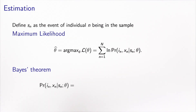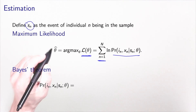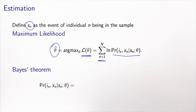Maximum likelihood estimation consists in solving an optimization problem that maximizes the log-likelihood function, which is the sum over all individuals in the sample of the logarithm of the probability that both i and x are observed, conditional to the fact that they are in the sample. We define Sn as the event that individual n is in the sample. The solution of this optimization problem is the maximum likelihood estimator of the unknown parameters. Now we will look at the contribution of each individual to this function, and we will use Bayes' theorem to derive this quantity.